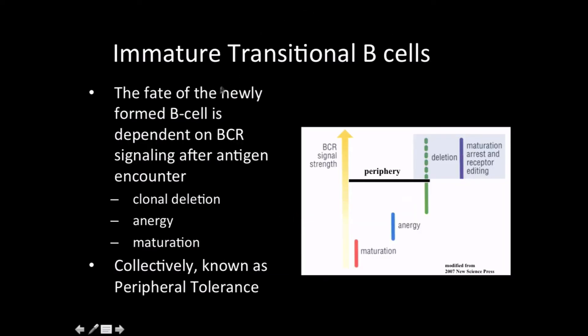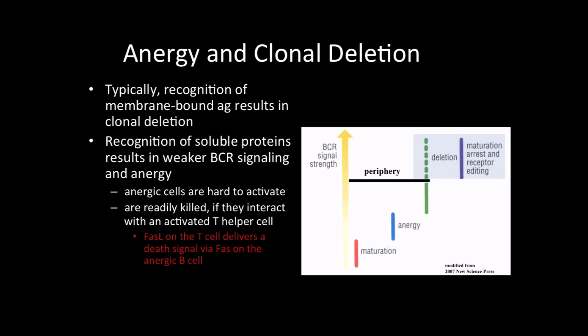The fate of this newly formed B-cell is dependent on B-cell receptor signaling after antigen encounter. This whole thing is collectively known as peripheral tolerance. We have clonal deletion, anergy, and maturation. Whether it's being activated or encountering self-antigen will have drastic impacts on its future. That's what this picture in the diagram on the right is showing.